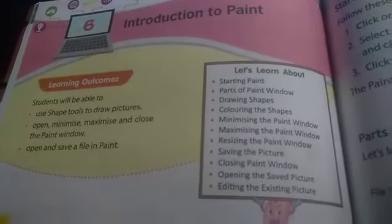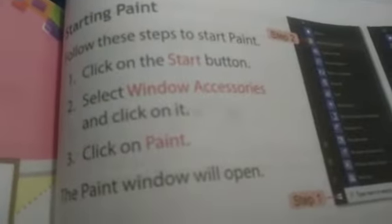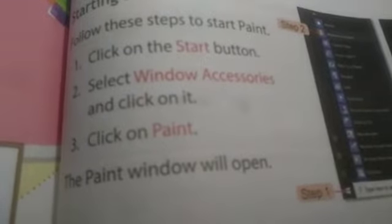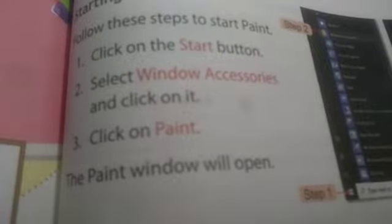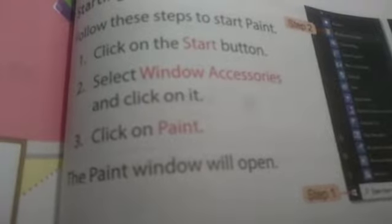Let us start with the steps to open a Paint application. Step 1: click on the Start button. Step 2: select Windows Accessories, click on it, and click on Paint. Step 3: the Paint window will open.